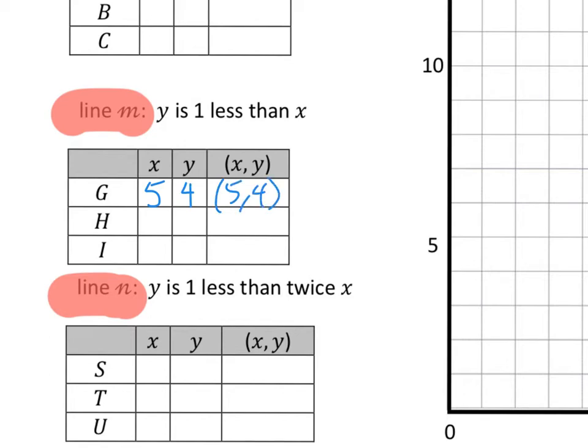And what if x were, I don't know, let's say ten? Then y would be nine, right? So that would be point (10,9). And then maybe the one of the ones in between. Let's say that x was seven. What would y be? Y would be one less than that. So seven, six, point (7,6). Awesome.